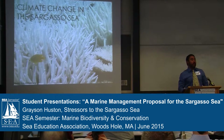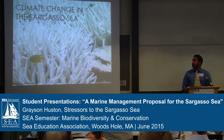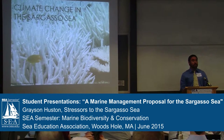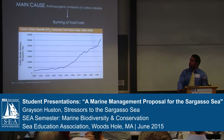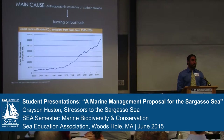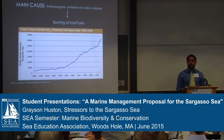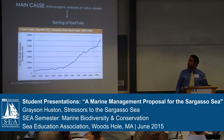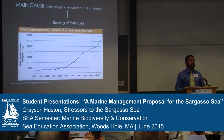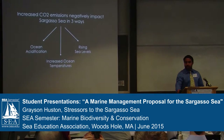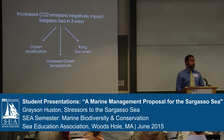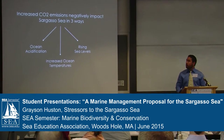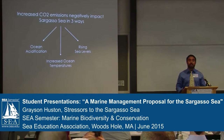Our final and most overarching stressor to the Sargasso Sea is climate change. The main cause of climate change is anthropogenic, or human, emissions of carbon dioxide. As this graph shows, carbon dioxide emissions have increased tremendously over the last century. These emissions negatively impact the Sargasso Sea in three main ways: ocean acidification, increased ocean temperatures, and rising sea levels.